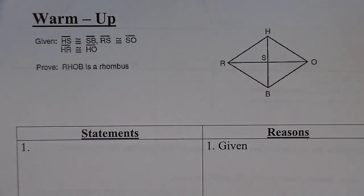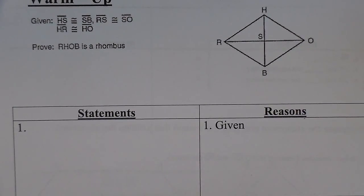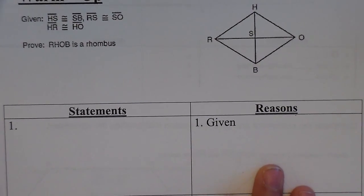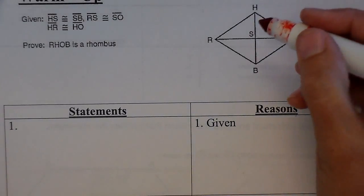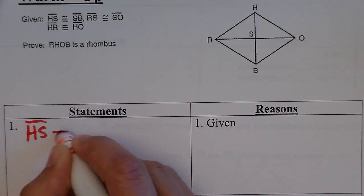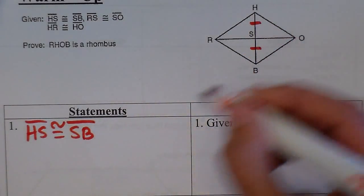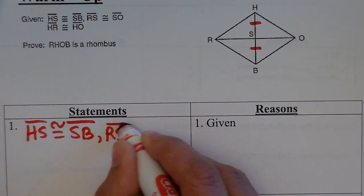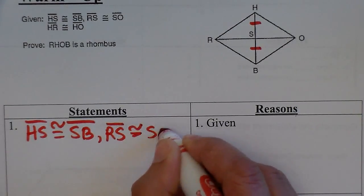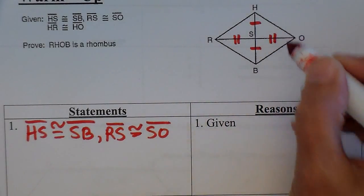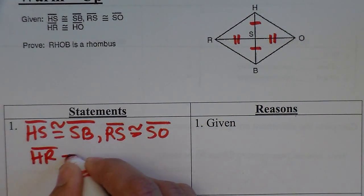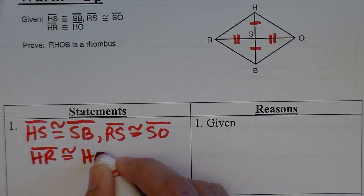Alright, so let's prove that this figure here is a rhombus. So we're doing a proof. The first thing is we're going to give all the givens. I like to separate the givens into their own steps. So we're going to be given that HS is congruent to SB, and that RS is congruent to SO, and that HR is congruent to HO.